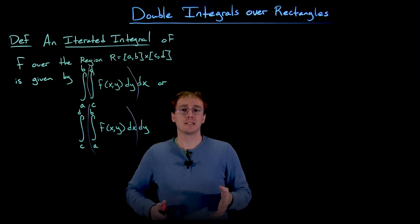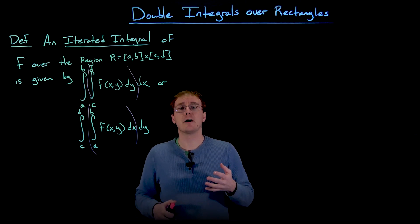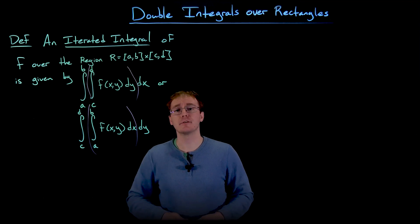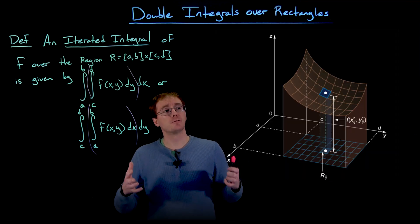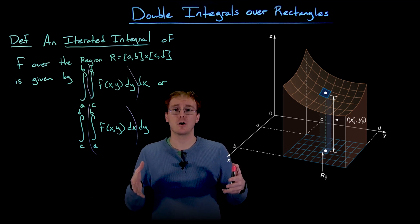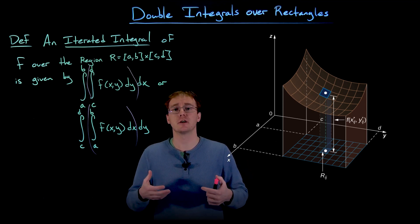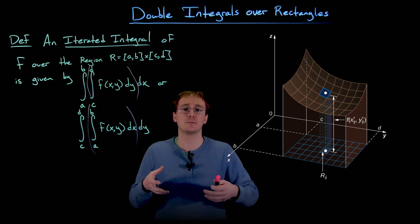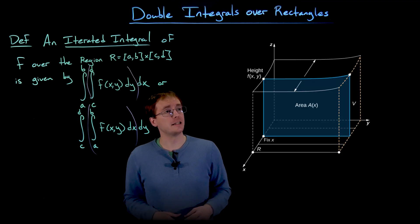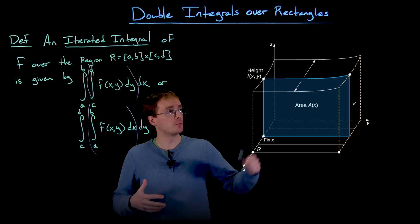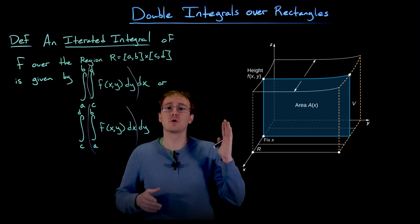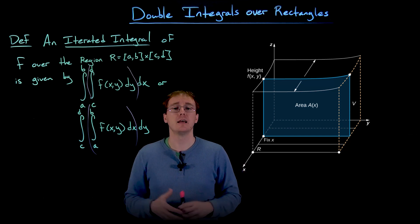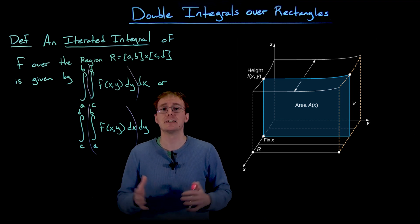To make sure we understand the geometry of iterated integrals and how it differs from the definition of a double integral, let's look at a couple of figures. In the first process we took our rectangular region R, broke it into sub-rectangles, and found volumes of approximating rectangular prisms. For iterated integrals we instead take the volume underneath our surface and look at vertical cross sections, finding the area of those cross sections and adding them up.